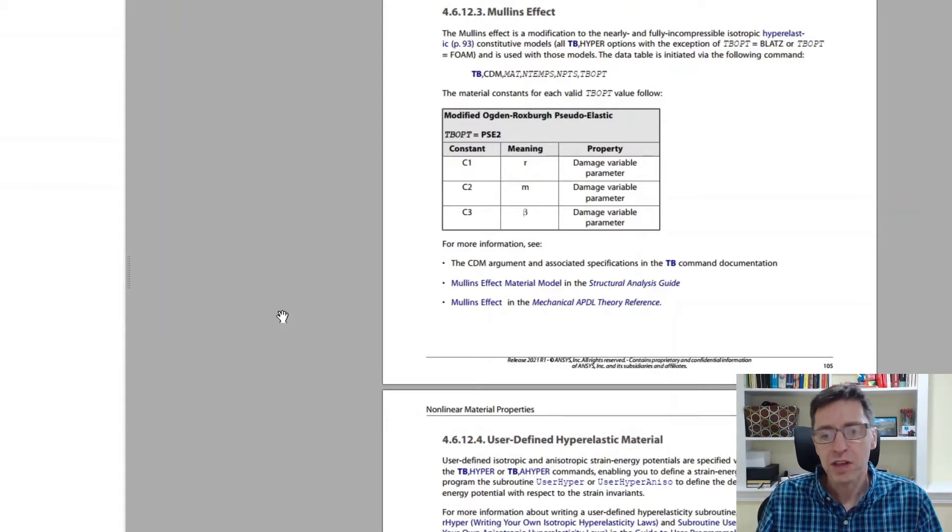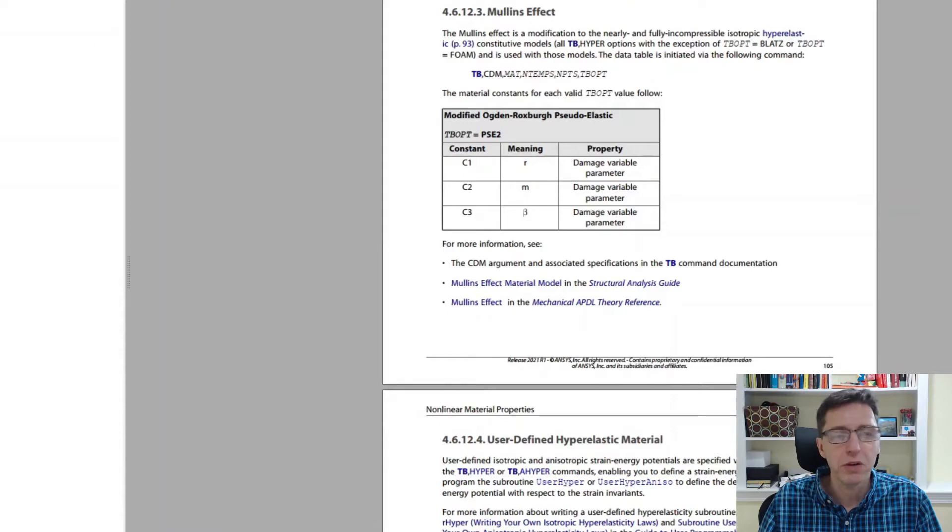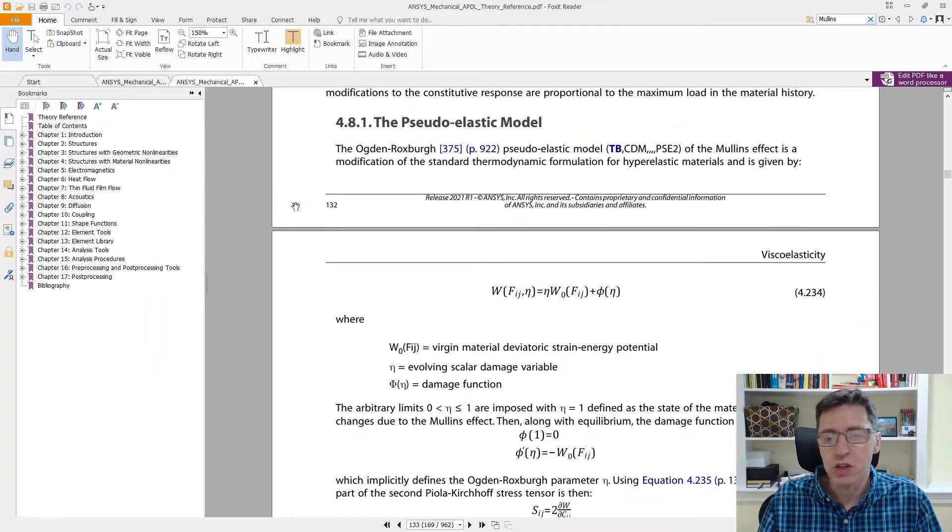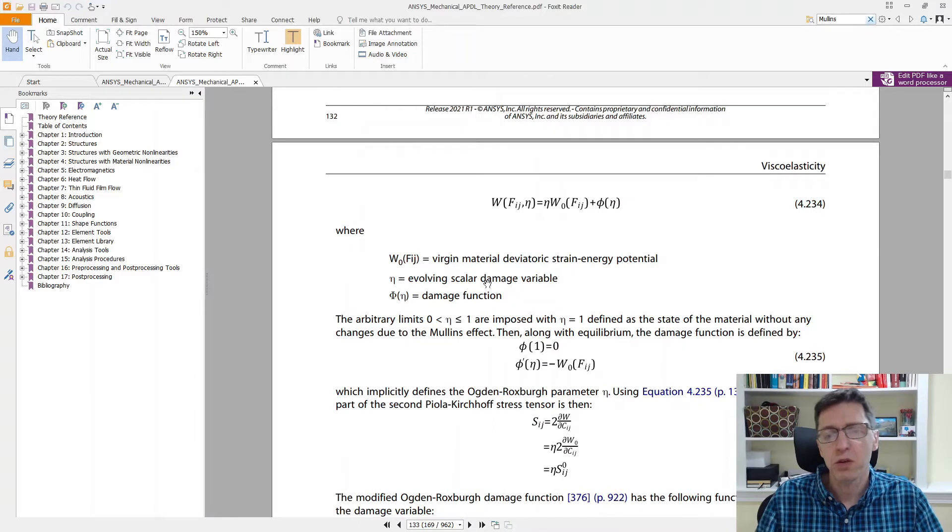So the Mullins effect, as you may recall, has three parameters: R, M, and beta. And here's a screenshot from the ANSYS manuals describing these. There's very little information here, but if you click on the theory manual it has all kinds of equations for what this material is all about. But it can be a little bit hard perhaps to understand what these equations are all about and how you use them.